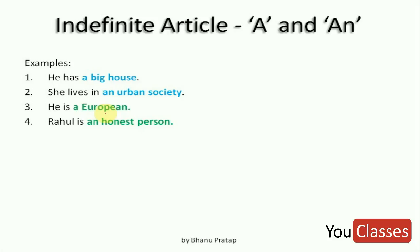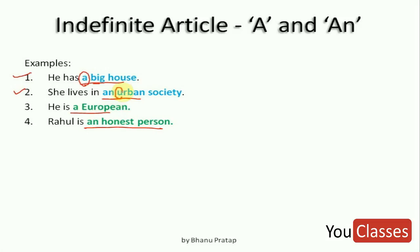There are certain examples of indefinite articles a and an. See the first example: He has a big house. She lives in an urban society. He is a European. Rahul is an honest person. You've been told in school that we have to use 'an' when the word starts with a, e, i, o, or u. You've been told this throughout school, and this is wrong.